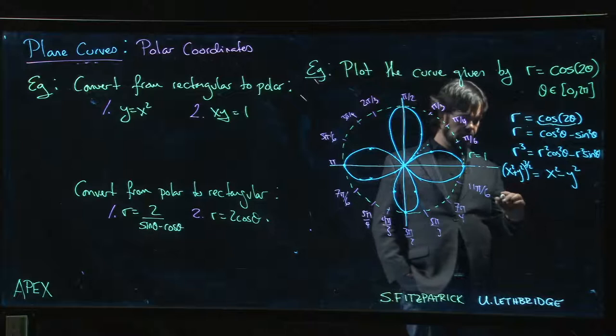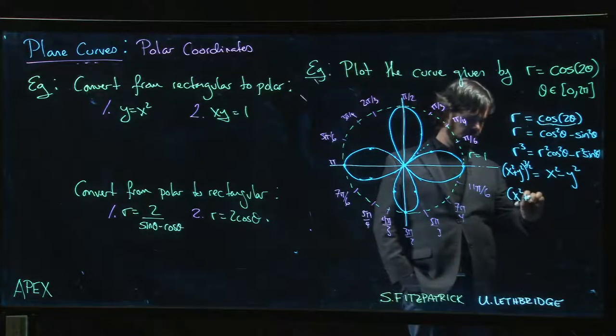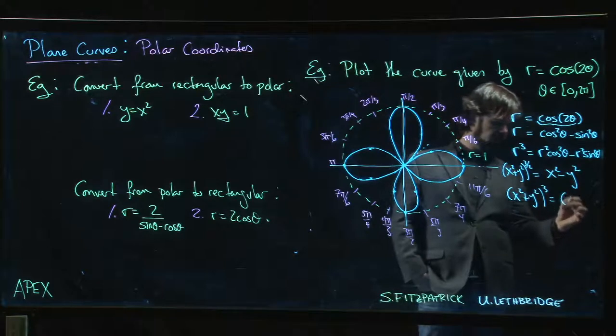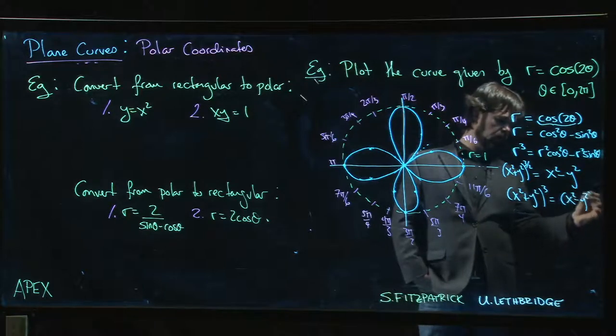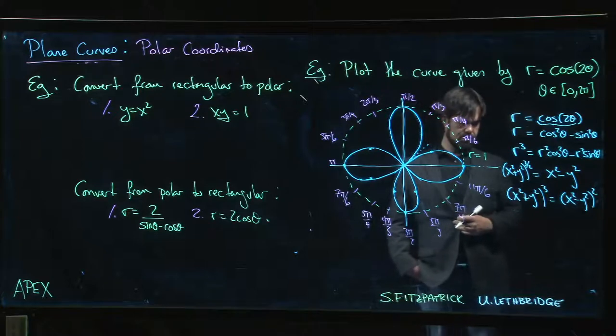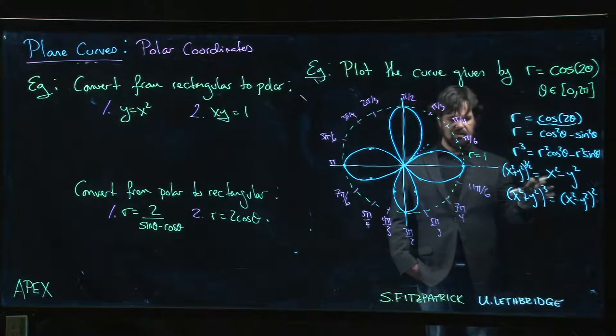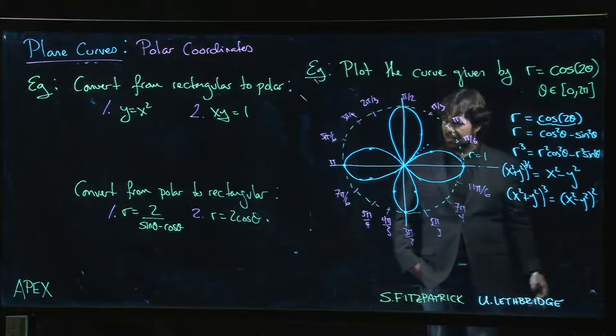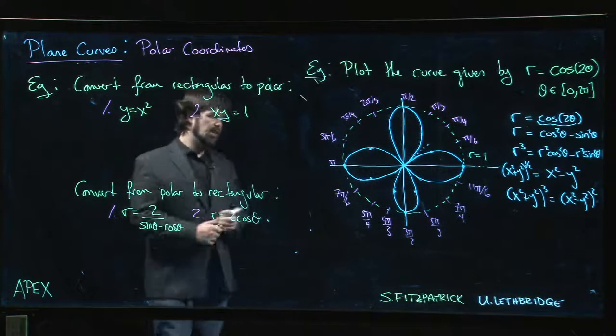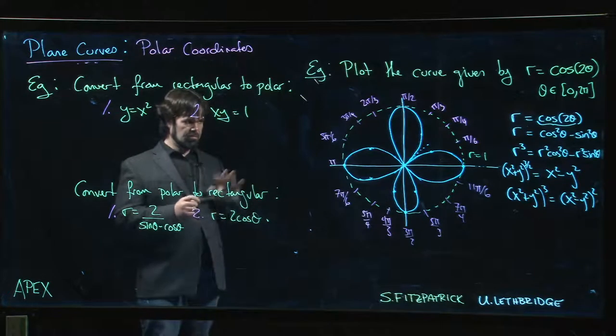I guess you could square both sides, so (x² + y²)³ equals (x² - y²)². Is that any better? I don't think I want to deal with that. That's a pretty ugly looking implicitly defined curve that I don't think I want to try to solve.